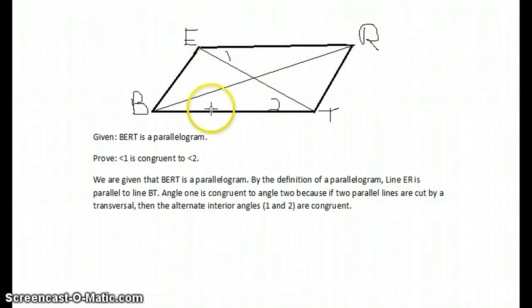We know that ER is parallel to BT because of the definition of a parallelogram. This line here is their transversal, and it forms angle 1 and angle 2, which are alternate interior angles, making them congruent.